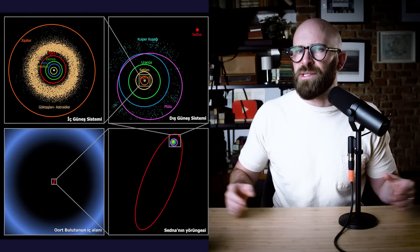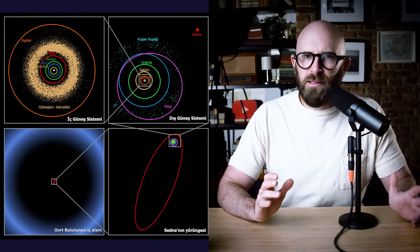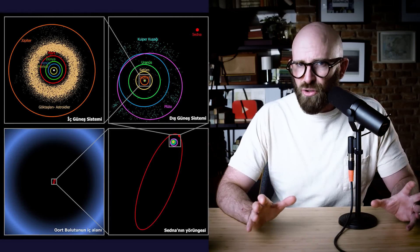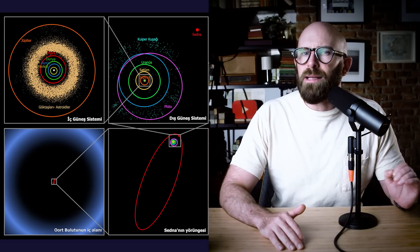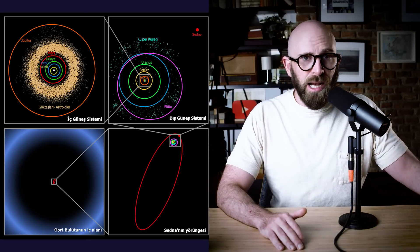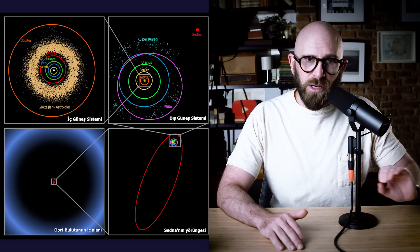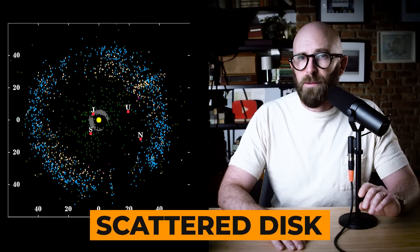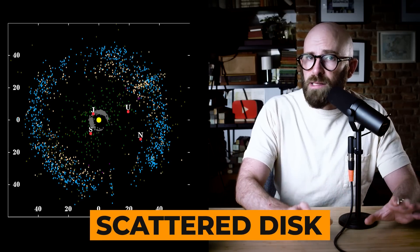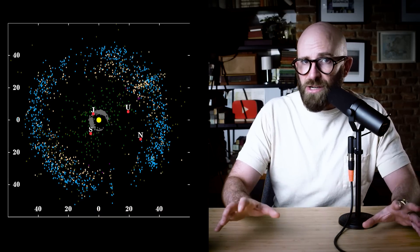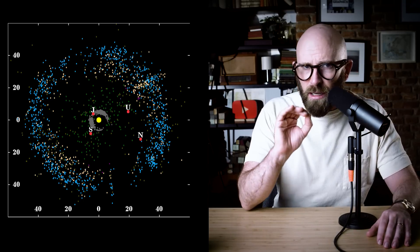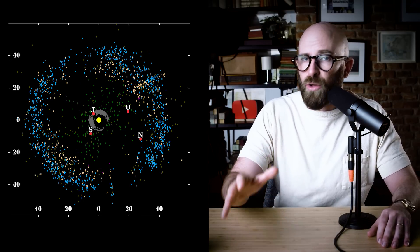But the models that astronomers have used to show how that process might have worked tend to run into a bit of a consistent problem. They don't accurately predict the relationship between the Oort cloud and another belt of trans-Neptunian objects, the scattered disk. In the scattered disk, objects are close enough to Neptune's orbit that Neptune can act on them gravitationally. That is to say, they're significantly closer to the sun than anything in the Oort cloud could be.